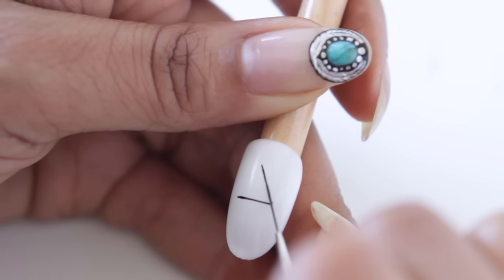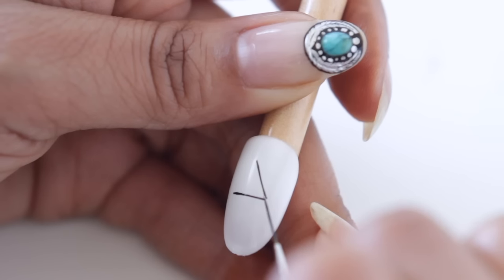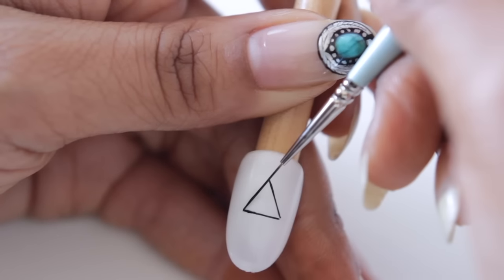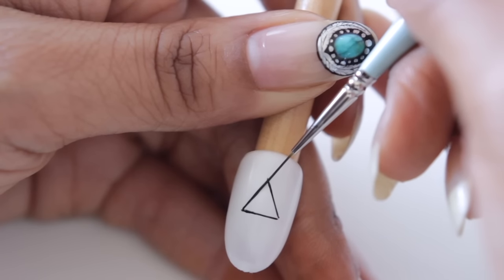You'll notice that I do use a few tips. You see that I always anchor my pinky because it keeps your hands steady and your line straight. You can also give yourself guidelines like I did before I drew the triangle.